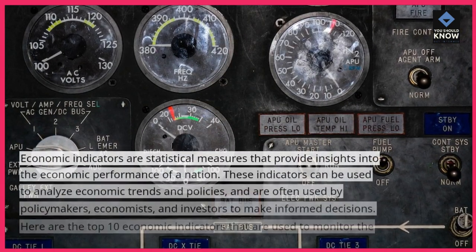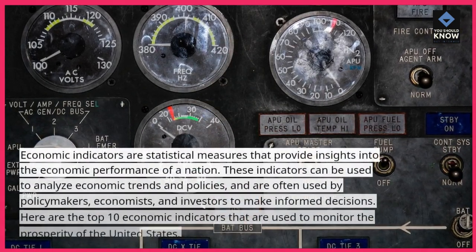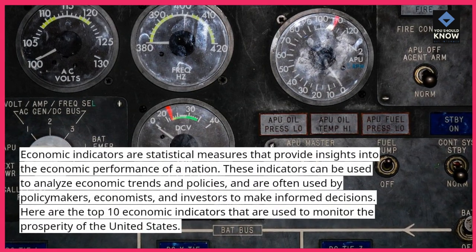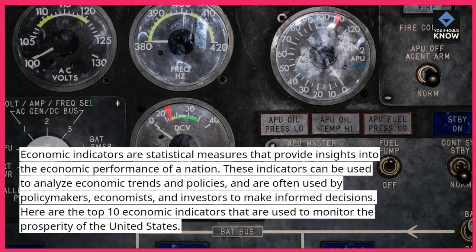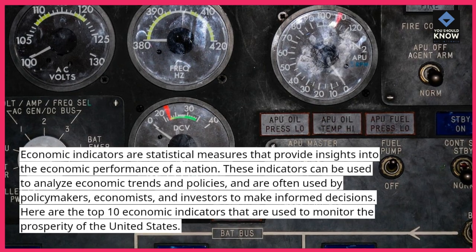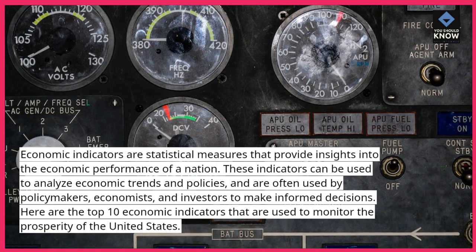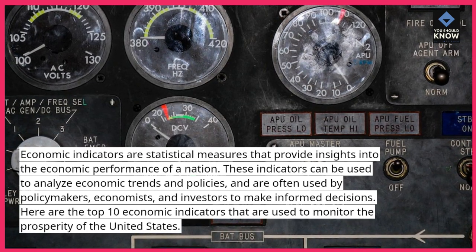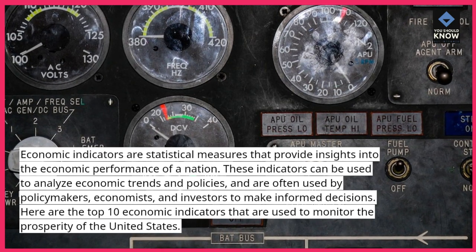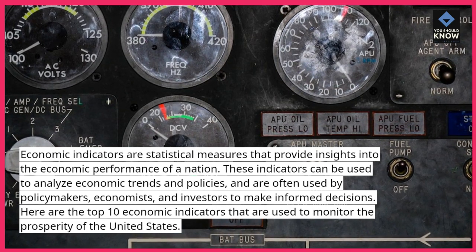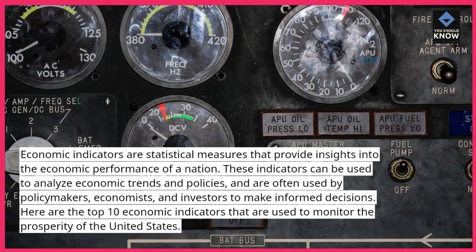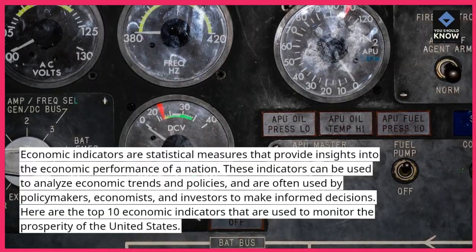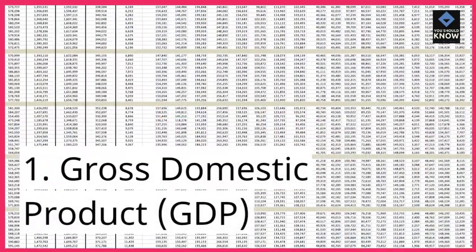Economic indicators are statistical measures that provide insights into the economic performance of a nation. These indicators can be used to analyze economic trends and policies, and are often used by policymakers, economists, and investors to make informed decisions. Here are the top 10 economic indicators that are used to monitor the prosperity of the United States.